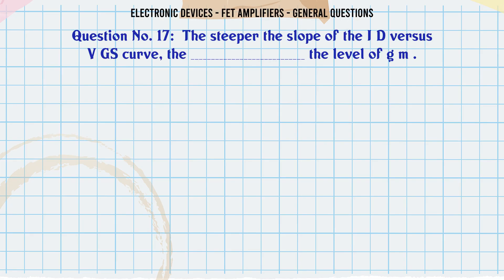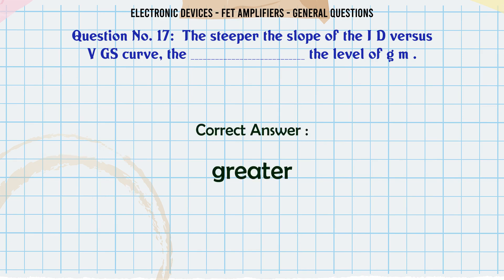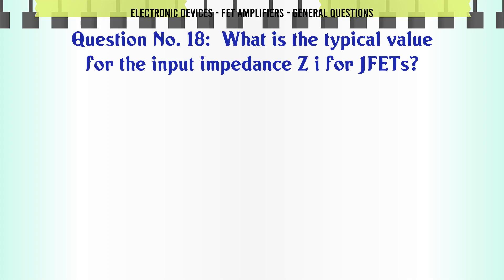The steeper the slope of the ID vs VGS curve, the _______ the level of GM. A. Less. B. Same. C. Greater. D. (no option given). The correct answer is Greater.